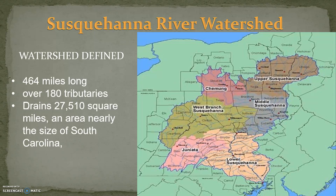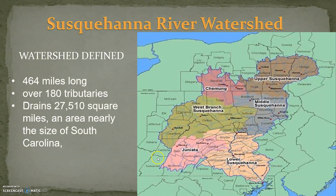On this slide, I've depicted a map of the Susquehanna River watershed. The watershed stems all the way up into New York State and through much of Pennsylvania. It's broken into different sections: the lower Susquehanna section, where Harrisburg is located; the Juniata River section; the west branch of the Susquehanna River section; the middle Susquehanna section; the upper Susquehanna section; and the Chemung section.